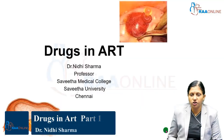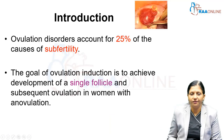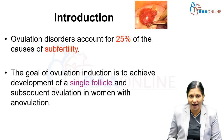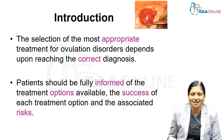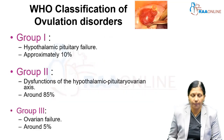Welcome to RAA Online. Today's topic is drugs in assisted reproductive technology. Ovulation disorders account for 25% of the causes of subfertility. The goal of ovulation induction is to achieve development of a single follicle and subsequent ovulation in women with anovulation. The selection of the most appropriate treatment depends upon reaching the correct diagnosis, and patients should be fully informed of treatment options, success rates, and associated risks.